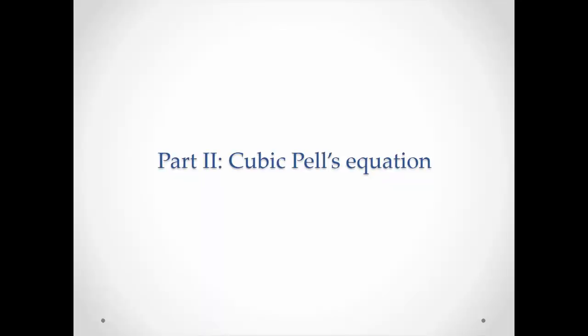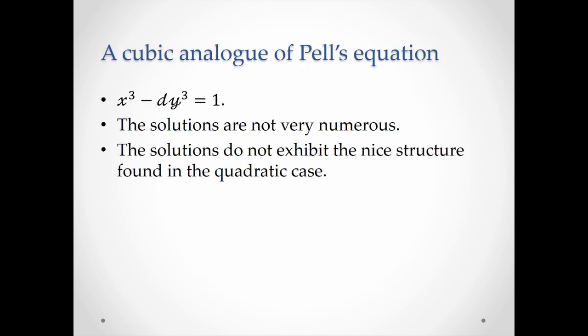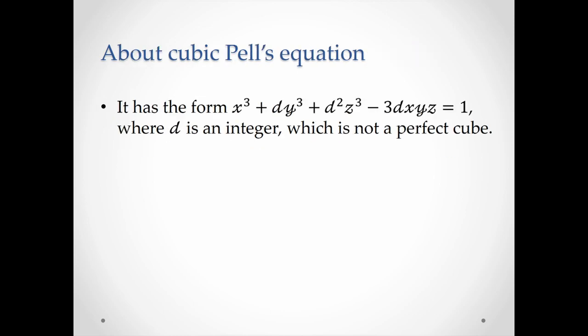Now I'm going to introduce the cubic Pell's equation. In this project, I was trying to solve the cubic Pell's equation using similar procedures. As the quadratic Pell's equation has the form x² − dy² = 1, it is natural to choose the cubic Pell's equation as x³ − dy³ = 1. However, it turns out that the solutions to this equation are not very numerous and do not exhibit the nice structure found in the quadratic case. Therefore, we will consider a different equation to be the cubic Pell's equation, which has the form like this, where d is an integer and is not a perfect cube. It is a better analog that admits a theory comparable to the quadratic version.